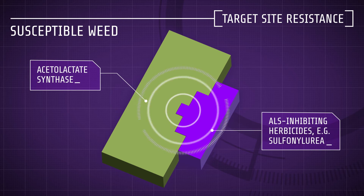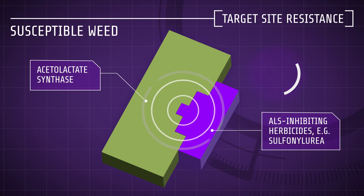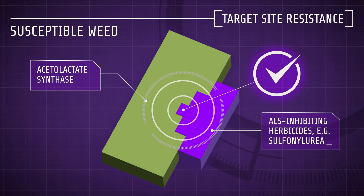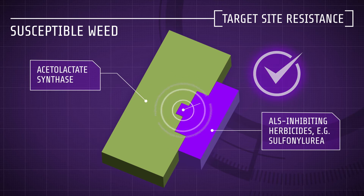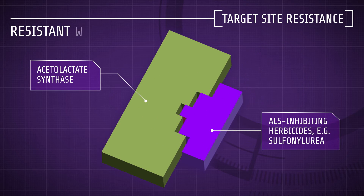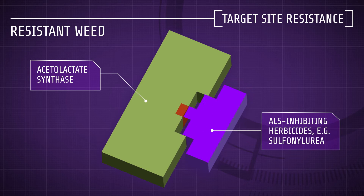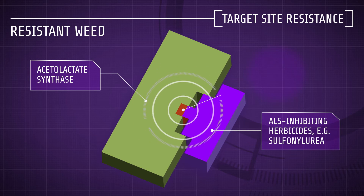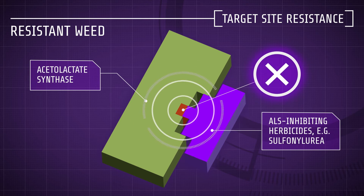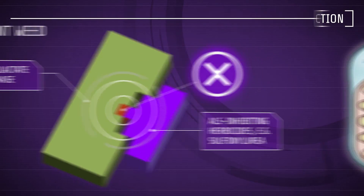In the case of ALS resistance, mutations in the herbicide binding site of acetylactate synthase alter its shape. As a result, the herbicide can no longer bind and inhibit its activity. This can result in complete loss of control.